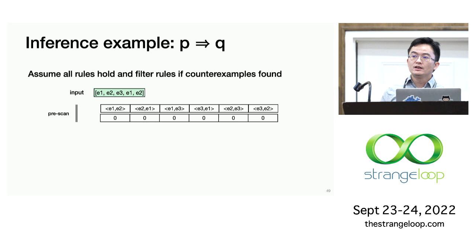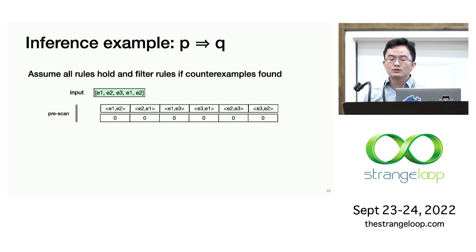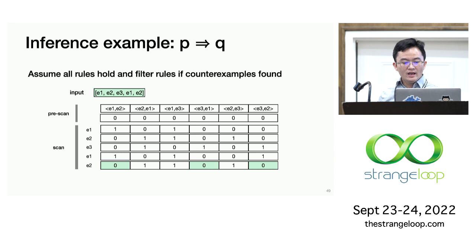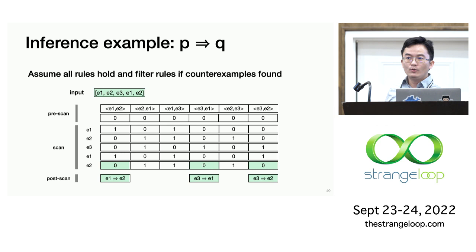In the first step, we initialize the occurrence counter for every possible event pair — all counters initialized to zero. In the second step, we iterate through the events in the trace. If we find the left operator, the counter is incremented. If we find the right operator and the counter is positive, we decrement the counter. In the end, if the counter equals zero, the relation holds. In this example, it outputs three rules after the inference step.